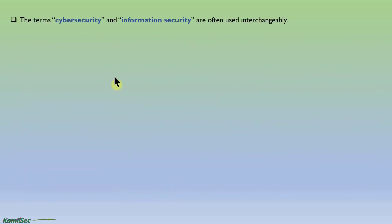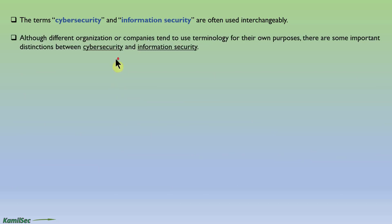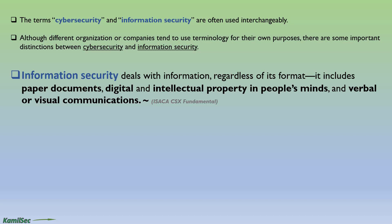Cyber security and information security are often used interchangeably, although different organizations or companies tend to use technology for their own purposes. There are some important distinctions between cyber security and information security. Information security deals with information regardless of its format — it includes paper documents, digital intellectual property, information in people's minds, and verbal or visual communication.